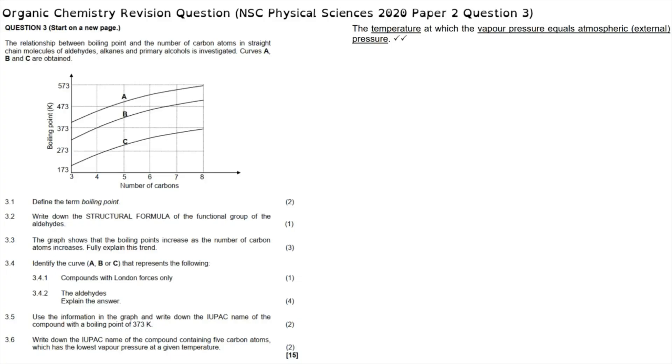The physical properties of organic molecules section of organic chemistry is question 3 in the chemistry paper, which investigates the relationship between boiling point and number of carbon atoms in straight chain molecules of aldehydes, alkanes, and primary alcohols. Curves A, B, and C are obtained. Question 3.1 asks to define the term boiling point, and the definition as given in the guideline document is: the temperature at which the vapor pressure equals the atmospheric pressure.